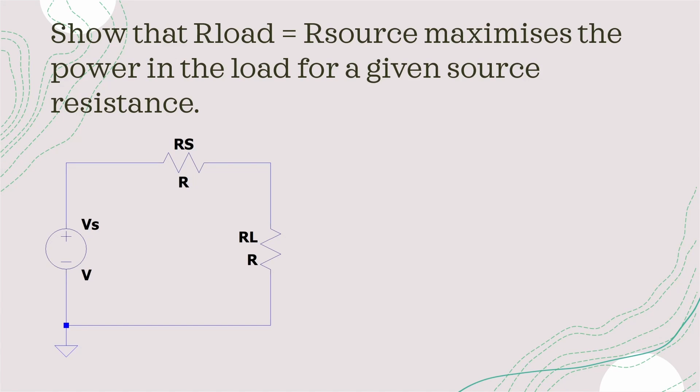Exercise 1.11 tells you to show that the maximum power dissipation occurs when our load, so the load resistance, is equal to the source resistance. So we can draw this circuit out. Let's say we have a voltage source. The values at the moment don't matter. We have some source resistance that's part of the voltage source, and then we have a load resistor. So what we're trying to show is that when RS and RL are equal, we get the maximum power inside resistor RL.